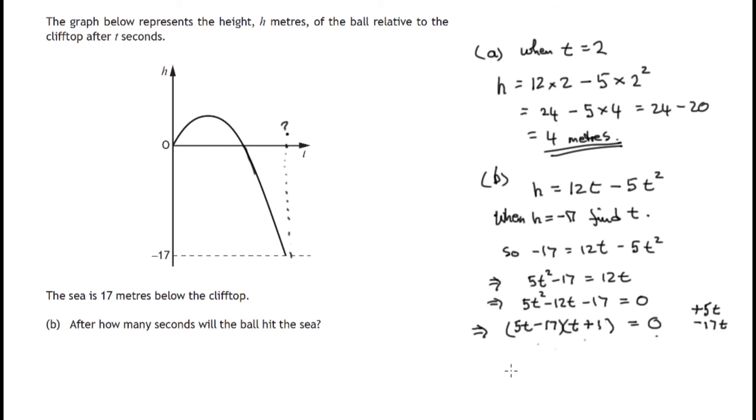So we've ended up with the position where we've got something times something gives us zero. So one or other of these two brackets must be zero. So either 5t minus 17 will equal zero or t plus 1 equals zero.